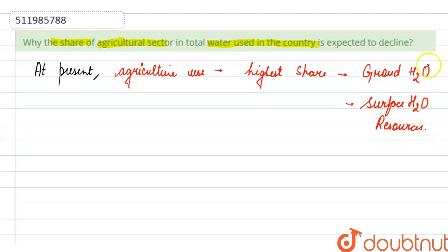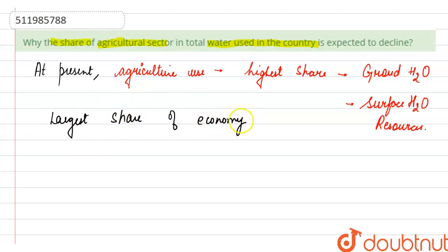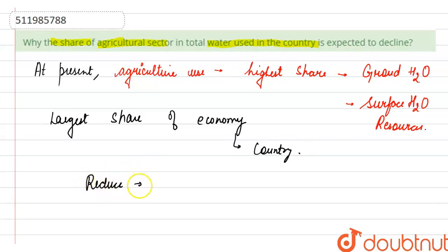The main reason is that the largest share of the country's water use is agriculture-based. I hope that would be clear. Thank you.